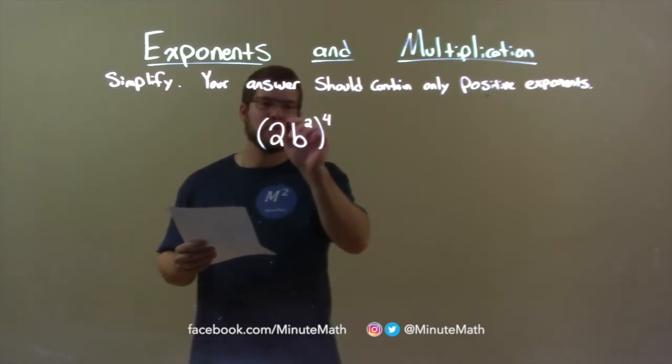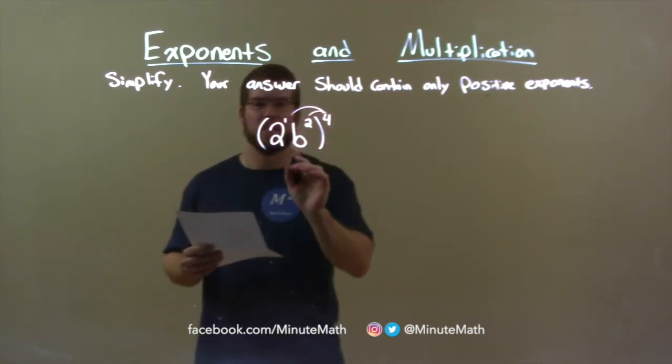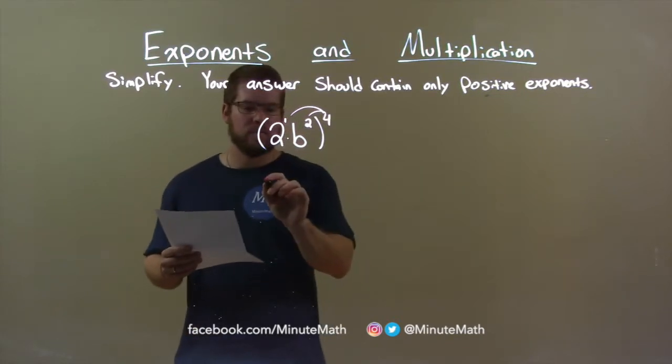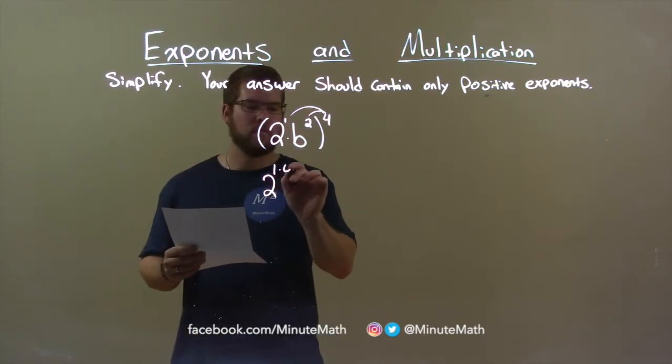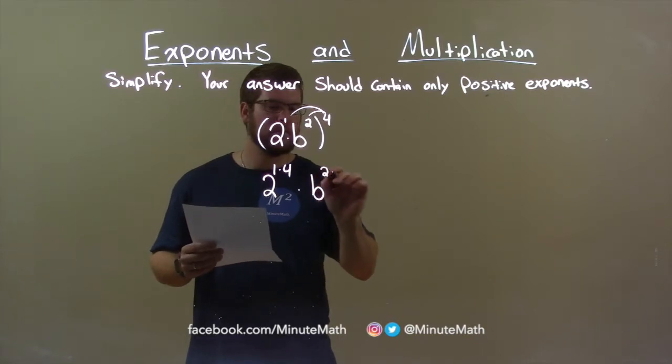Now remember, 2 is really 2 to the first power. So we multiply these exponents out. This becomes 2 to the 1 times 4 power, multiplied by b to the 2 times 4 power.